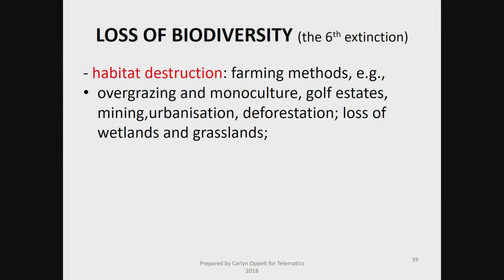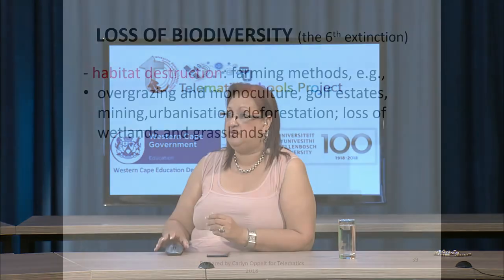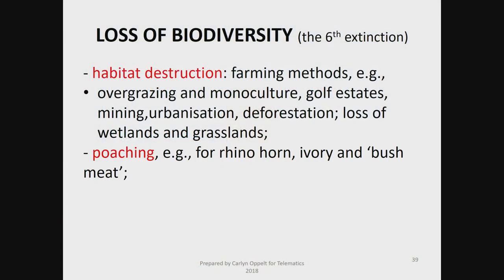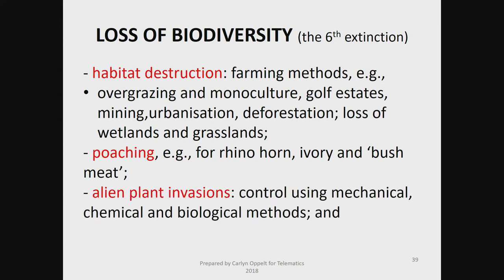Loss of biodiversity involves habitat destruction due to farming methods, overgrazing, monoculture, and golf estates that use up huge amounts of land and habitat. When you build a golf estate, you must clear that section — what happens to all the plants and animals that used that land as their natural habitat? This is a big problem in our country: poaching. Rhino horn, ivory, bushmeat. Seven rhinos were poached in one day in the Chukluwe Reserve in KZN — it makes me so angry.